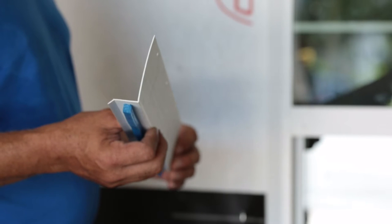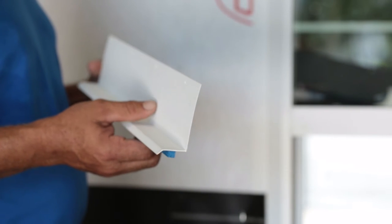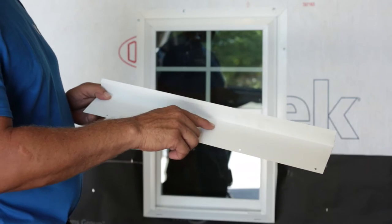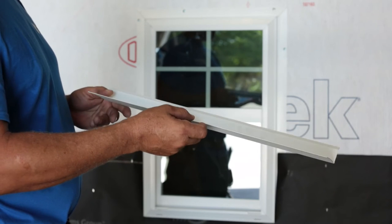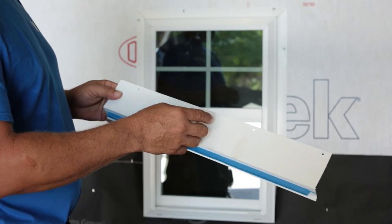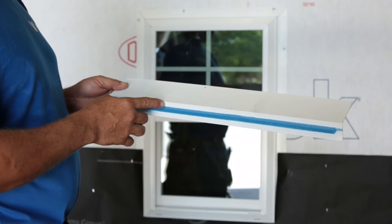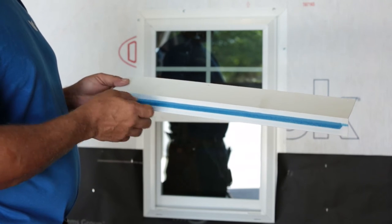Our backer bead family of products includes a drip flashing made with a code-approved 3.5-inch attachment flange. The closed-cell backer rod is factory applied consistently with the proper depth to provide a consistent gap around your opening.